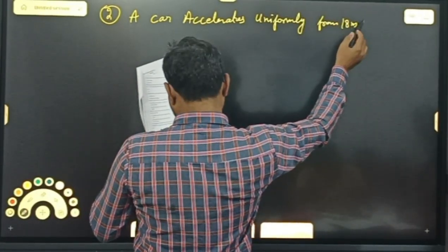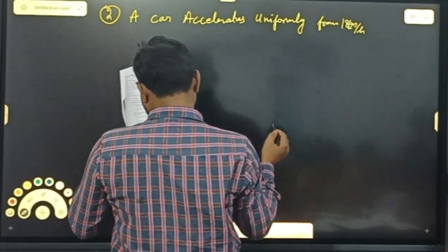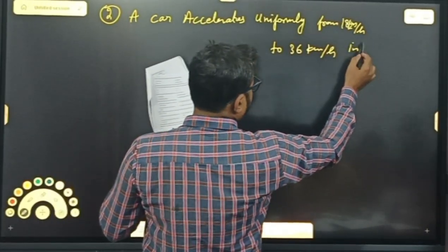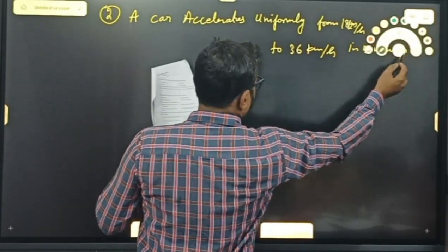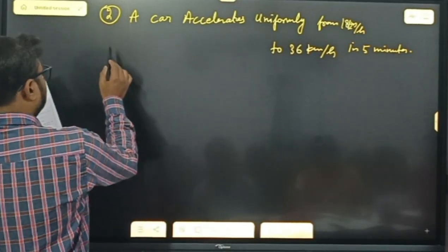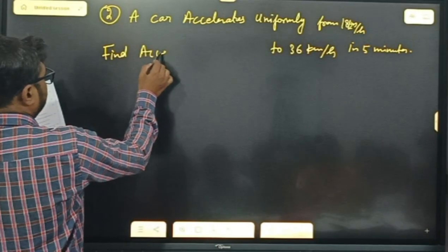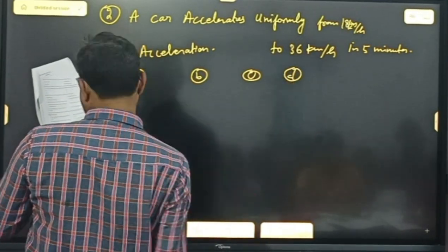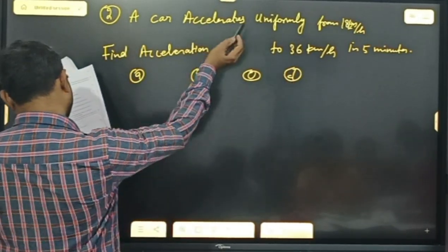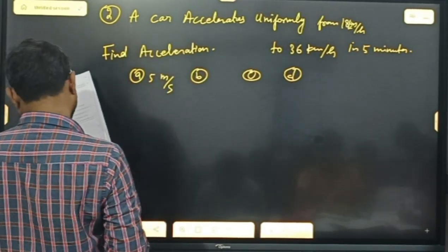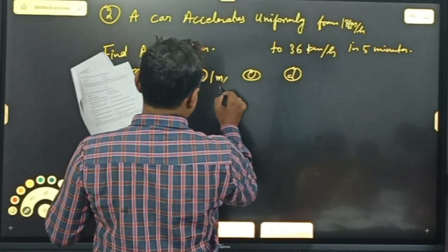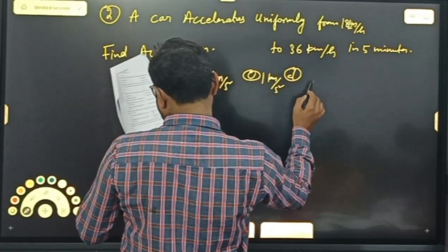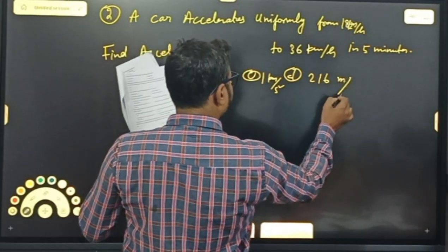Next question: speed of a vehicle increases from 18 kilometer per hour to 36 kilometer per hour in 5 minutes. So the acceleration kitna hoga? Options: A) 5 meter per second, B) 1 meter per second square, C) 1 kilometer per second square, D) 1/6 meter per second square.